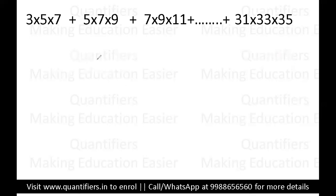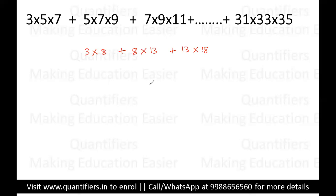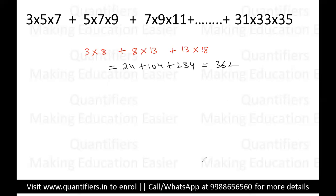Just to verify, I'll take one more example. Let's say: 3 × 8 + 8 × 13 + 13 × 18, with only three terms. Let us solve this manually: 3 × 8 = 24, 8 × 13 = 104, 13 × 18 = 234. Adding these: 234 + 104 = 338, plus 24 gives 362. So the answer should be 362. Now let us verify using the shortcut method.